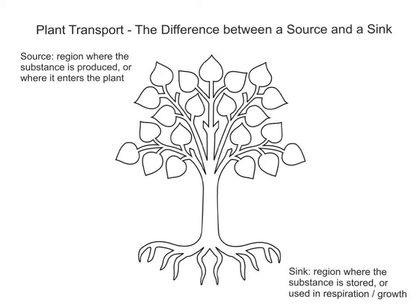The phloem is part of the vascular bundle in the plant, and I have done separate videos on the differences and structure between xylem and phloem, but ultimately it's almost like going from A to B. A is the source, B is the sink, and we're moving these soluble carbohydrates and amino acids through the phloem from source to sink.